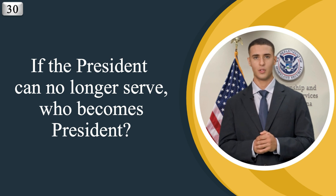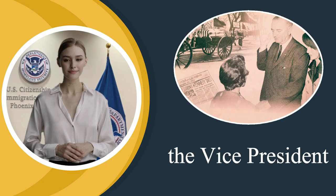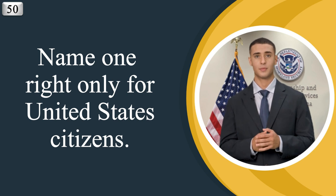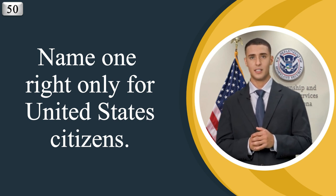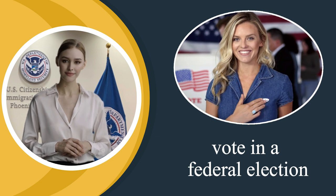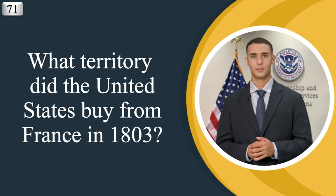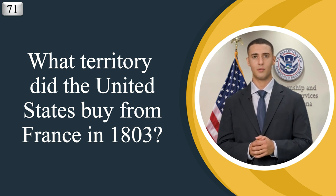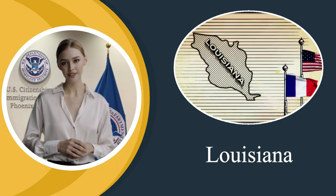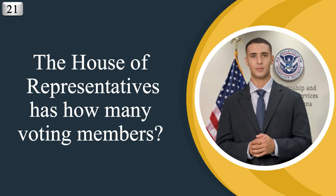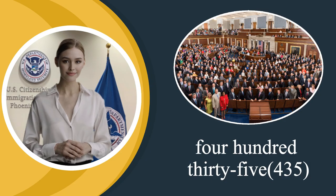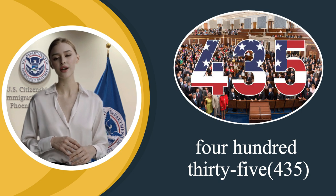If the president can no longer serve, who becomes president? The vice president. Name one right only for United States citizens. Vote in a federal election. What territory did the United States buy from France in 1803? Louisiana. The House of Representatives has how many voting members? Four hundred thirty-five.